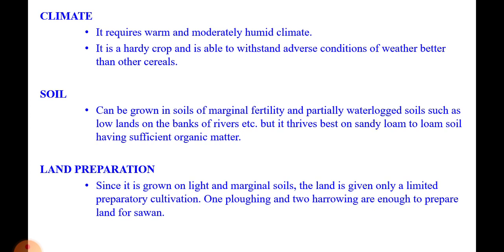Regarding land preparation: since it is grown on light and marginal soils, the land is given only limited preparatory cultivation. One plowing and two harrowings are enough to prepare the land for sawan.